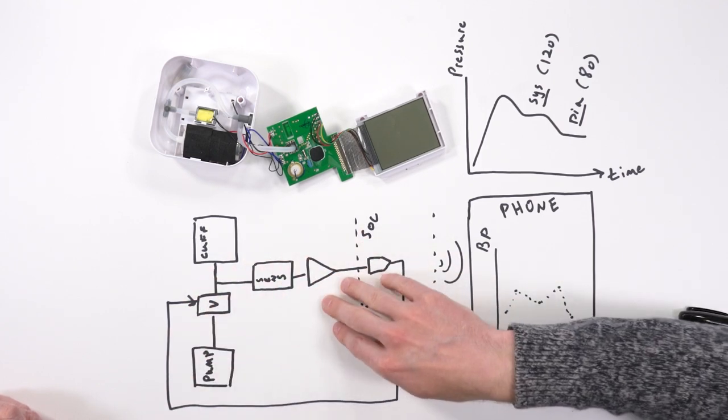Okay. So it's using that loop and then it's going to determine your blood pressure basically. Now, you said the SOC takes that in. Once we have that information, what does it do with it? I'm assuming this is where the connectivity comes in.